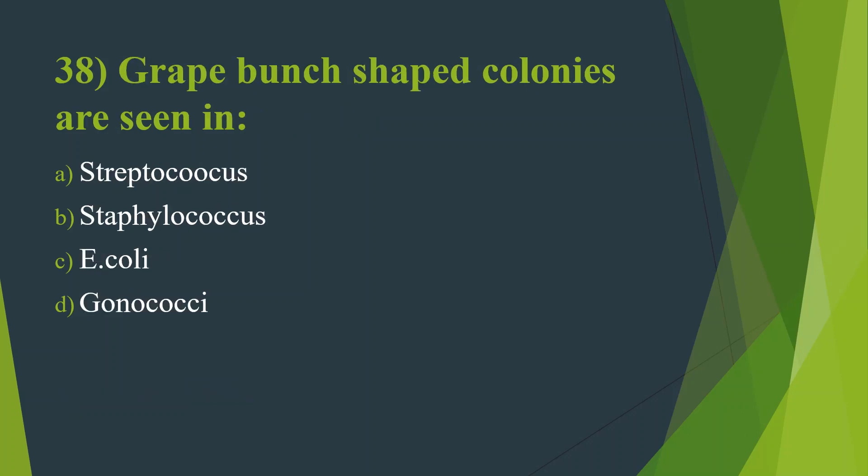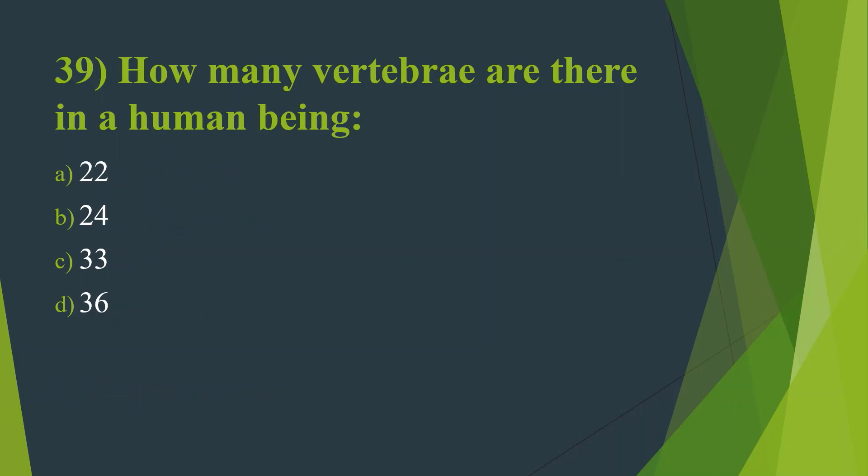Thirty-eighth question: Grape bunch shaped colonies are seen in — Option A, Streptococcus. Option B, Staphylococcus. Option C, E. coli. Option D, Gonococci. Answer is Option B, Staphylococcus.